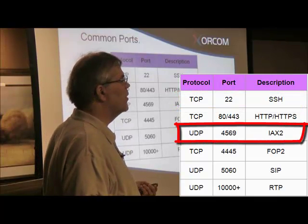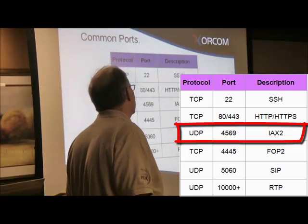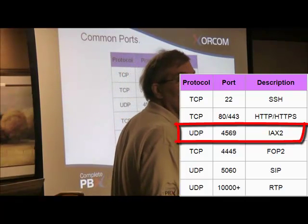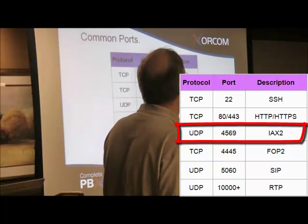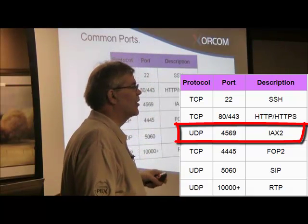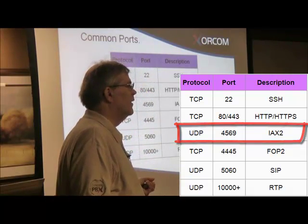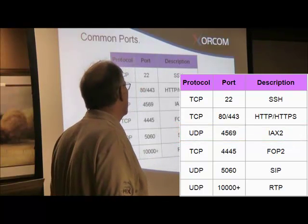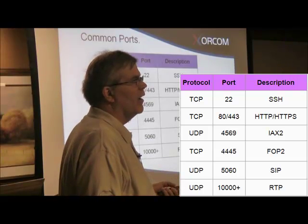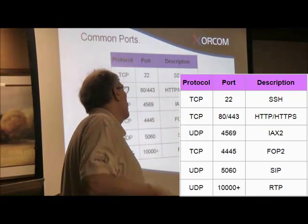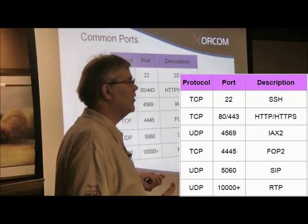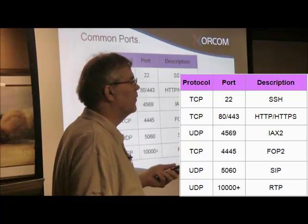IAX2 is a communication protocol between two switches. It stands for Inter-Asterisk eXchange, and this is the second version of it. It's been around for quite a while. It's what almost everybody in the Asterisk community uses to tie two boxes together. For non-Asterisk implementations, they use SIP, but SIP is more designed for talking from a peer to a client. IAX works well for peer-to-client too, but it's designed really well for many channels talking between two boxes, and it's much more efficient than SIP.